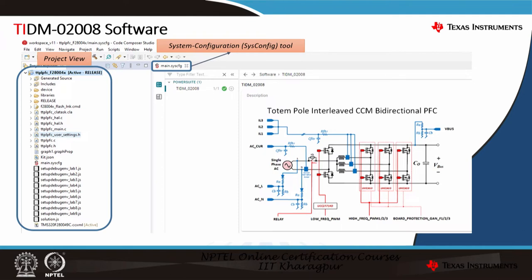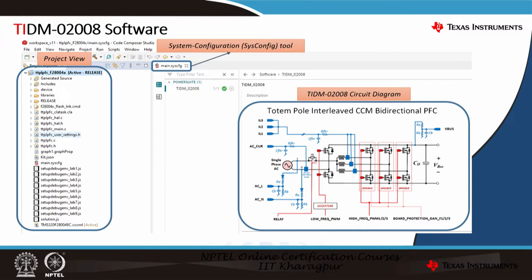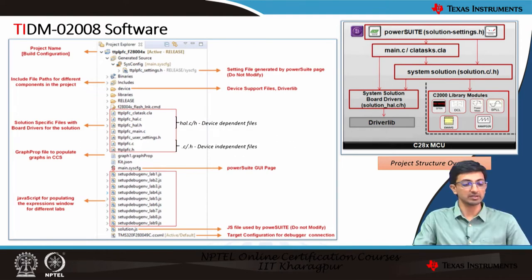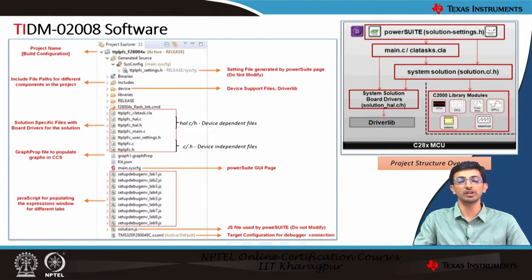By default, it will open the main.sysconfig — that is the system configuration tool — from which you will be able to see the TIDM-2008 circuit diagram. Going into the project view section, the first thing you see is the TTPL underscore F28004X project part number. The second thing is the TTPL PFC underscore settings dot H file, which is generated by the power suite page and the user is not expected to modify it.